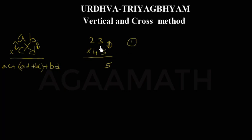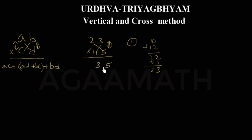Now do the cross multiplication: 2 into 5 is 10, and 3 into 4 is 12. Add both: 22, plus the carried 1 is 23. Write 3 and carry 2. Then the vertical: 2 into 4 is 8, plus the carried 2 is 10. So 23 into 45 equals 1035.